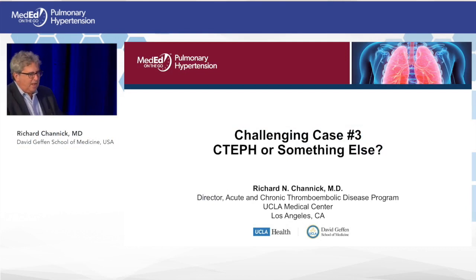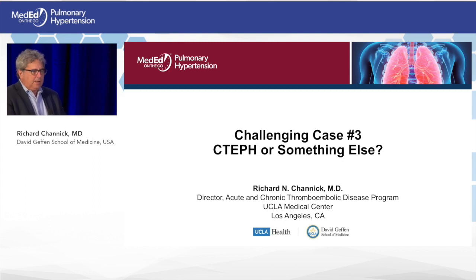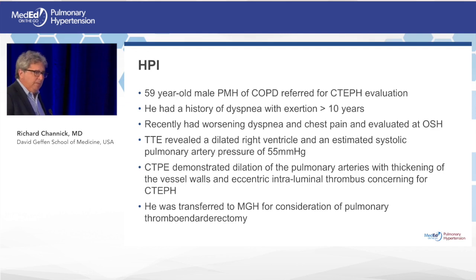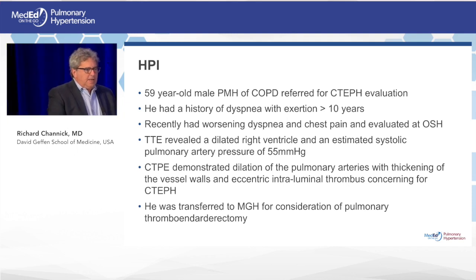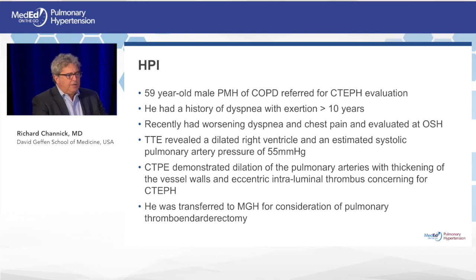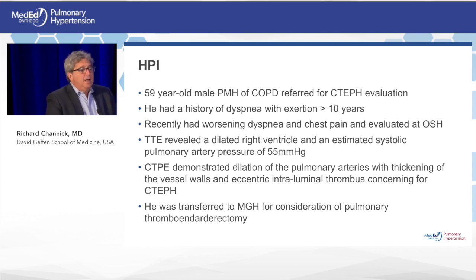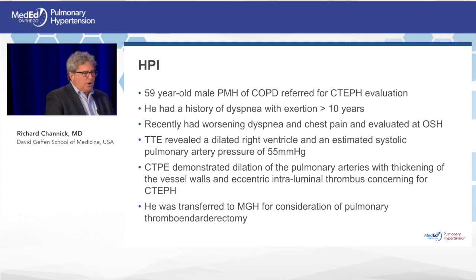We'll change gears completely and move to CTEPH, with an interesting diagnostic case. This was a 59-year-old man with a history of COPD, referred for evaluation of suspected CTEPH. He had about 10 years of shortness of breath that had recently worsened. An outside echo showed significant RV enlargement with estimated pressures of 55. CT scan showed dilated pulmonary arteries with a lot of thrombus inside the vessel, felt to be almost certainly CTEPH, and the patient was transferred for consideration of an endarterectomy.